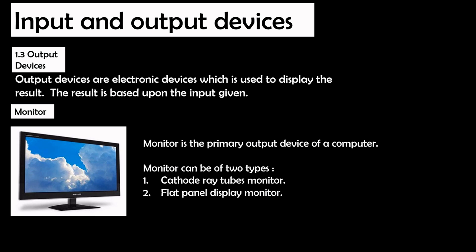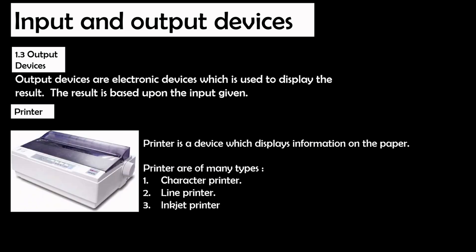Another example of an output device is a printer, where information is printed on paper. Printers are of many types, including character printers, line printers, and inkjet printers.